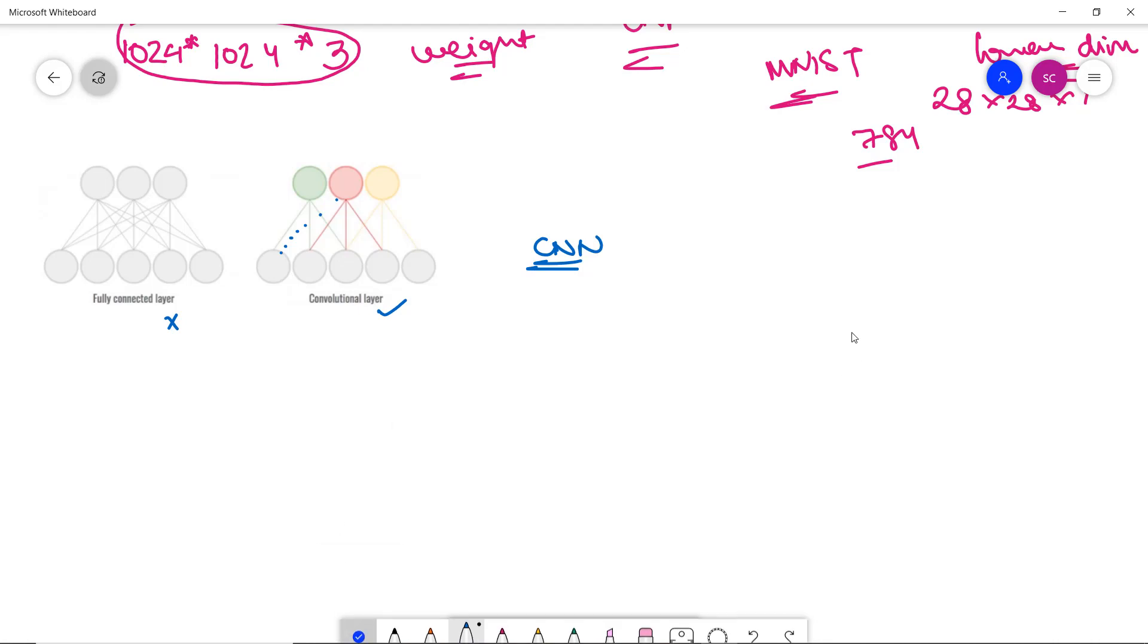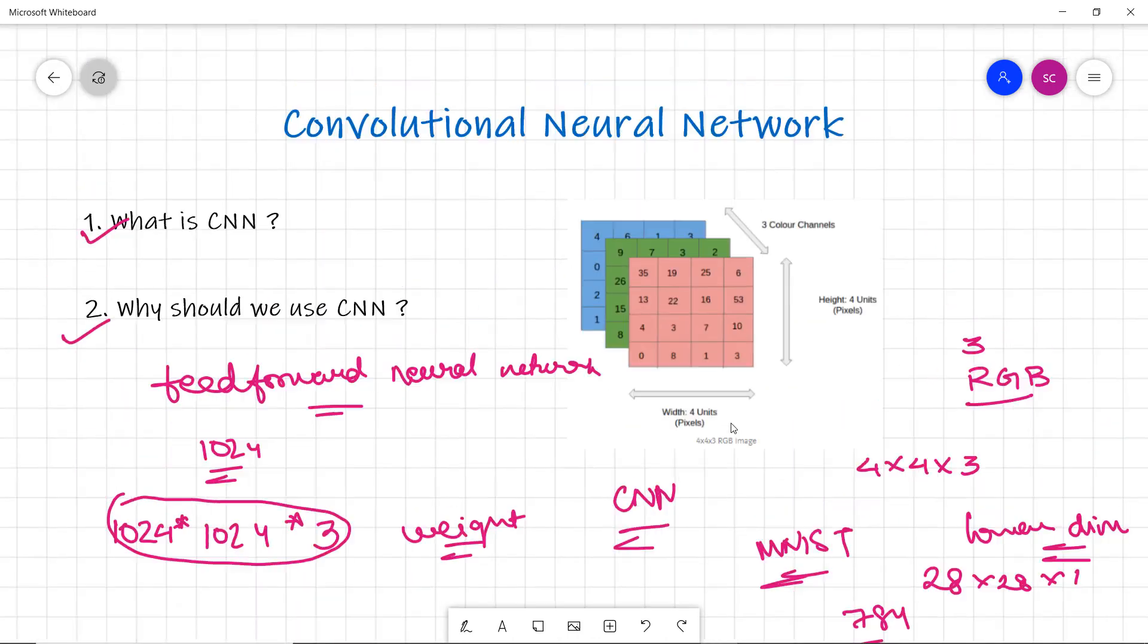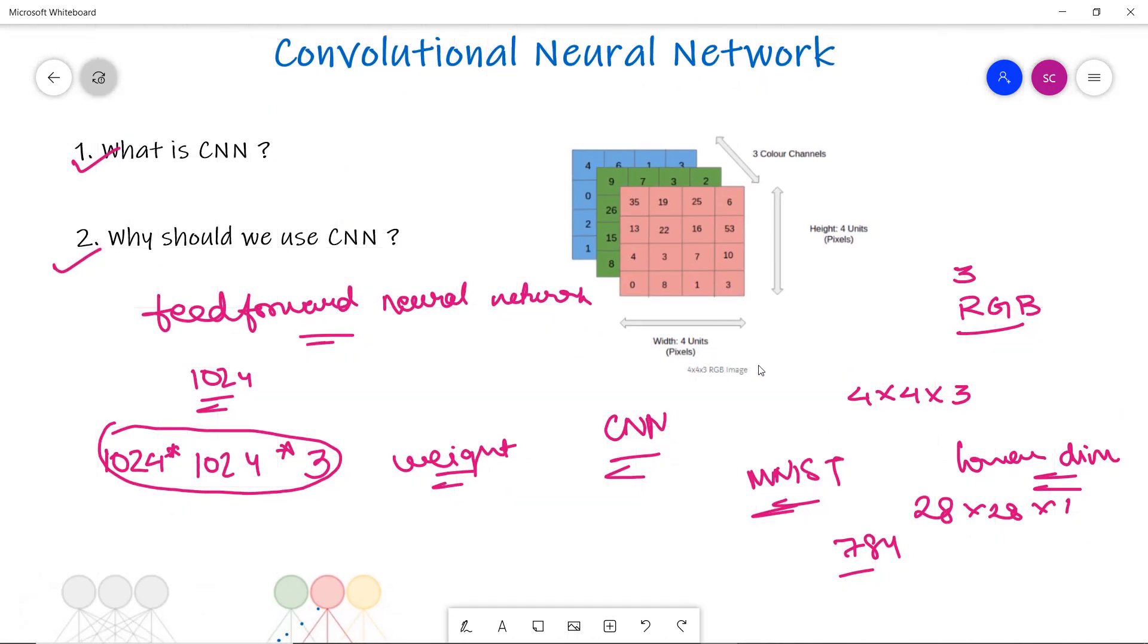By the end of this video, we discussed what is CNN and the use of CNN. CNN reduces the characteristics of the image without disturbing or interfering with the properties. The image is still identifiable, and we extract features and convert it into lower dimensions without losing characteristics. Next, we will see the several operations done in the convolutional layer.